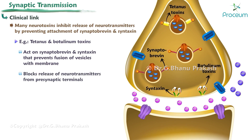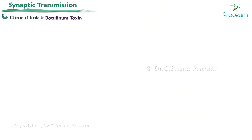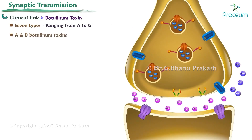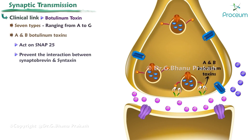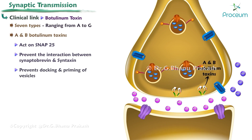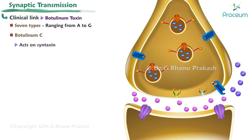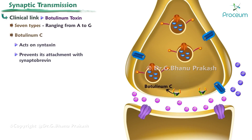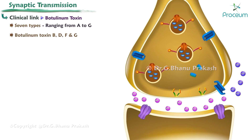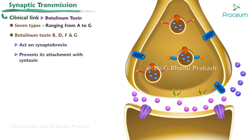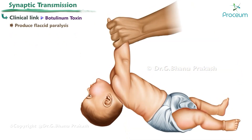Botulinum toxins are of seven types, ranging from A to G. A and B botulinum toxins act on SNAP25 and prevent interaction between synaptobrevin and syntaxin, preventing docking and priming of vesicles. Botulinum C acts on syntaxin and prevents its attachment with synaptobrevin. Botulinum toxins B, D, F, and G act on synaptobrevin and prevent its attachment with syntaxin.